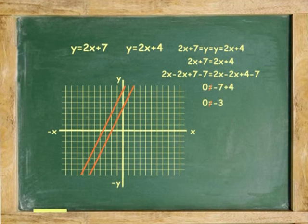0 is not equal to negative 3. Because 0 is not equal to negative 3, the lines will not meet and there is no solution to the system. The lines are parallel.